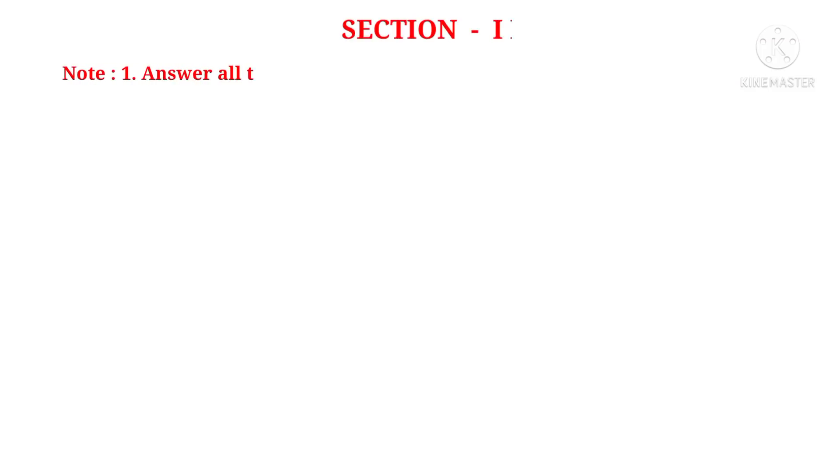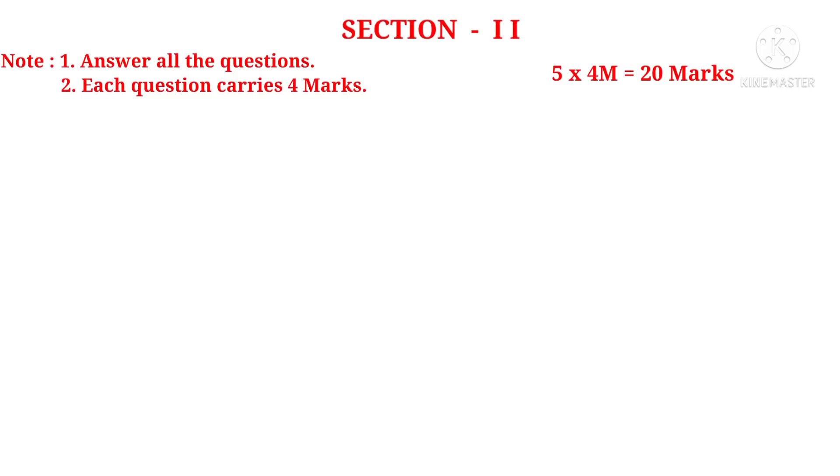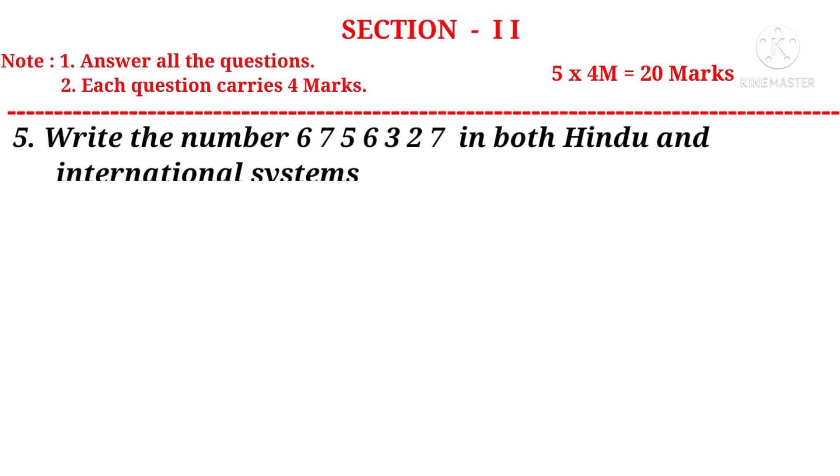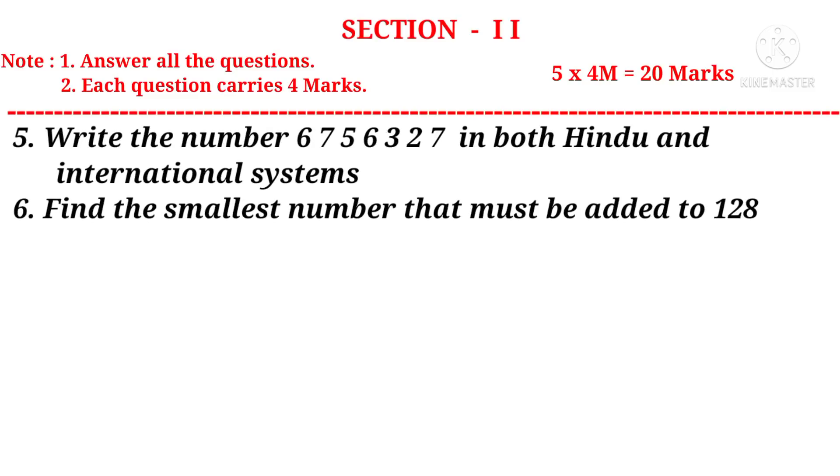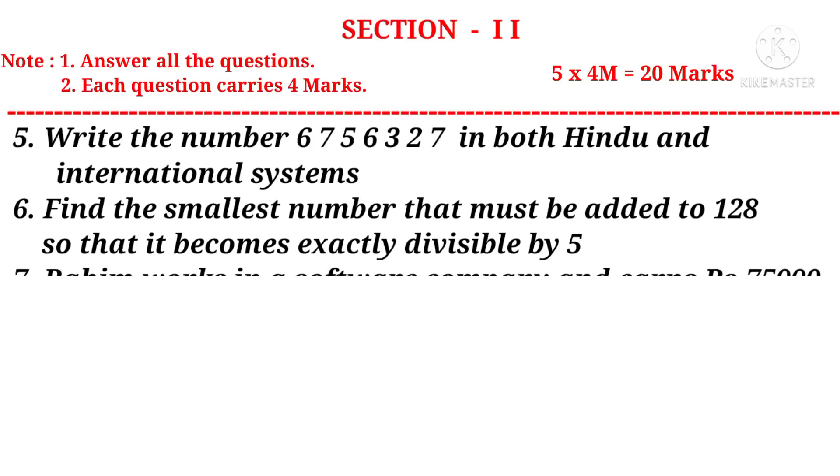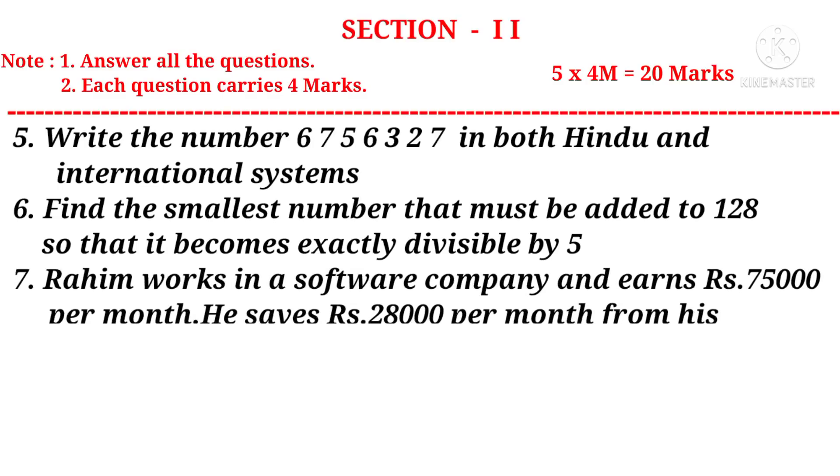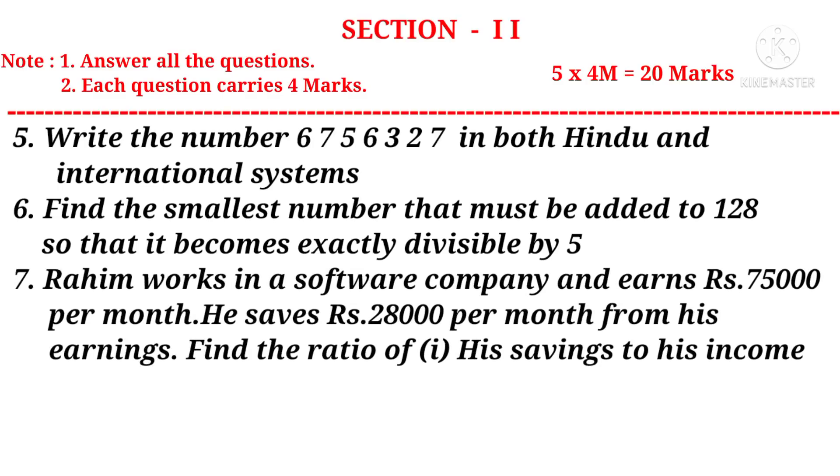Let us see section 2. Note, answer all the questions. Each question carries 4 marks. There are 5 questions, so 5 into 4 marks is 20 marks. Now let us take fifth question: Write the number 6756327 in both Hindu and international systems. Number six: find the smallest number that must be added to 128 so that it becomes exactly divisible by 5.